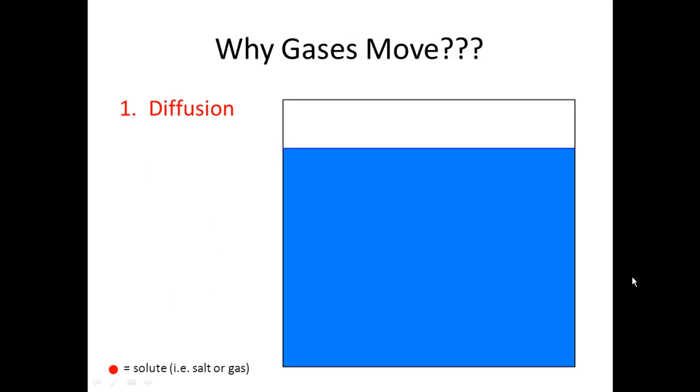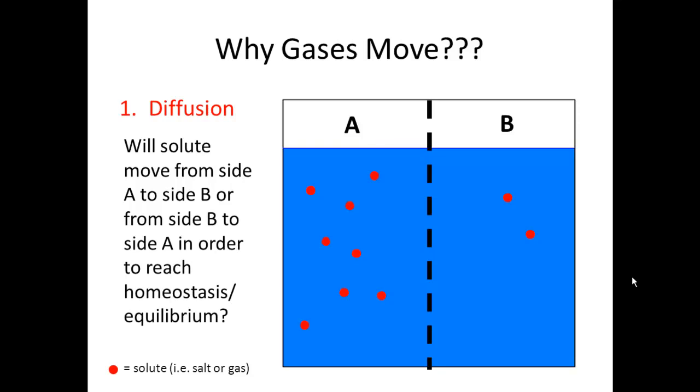Let's begin talking about diffusion. Here we have a container, or a tub of water, and I'm going to put this little divider here in the middle. Then I'm going to add some solutes into the equation. At the bottom left of the screen you'll see a little legend saying the solutes are the red dots. We have a lot more on one side and fewer on the other side. These solutes represent salt and water, for example, or they can represent what we're going to be talking about, gases and water.